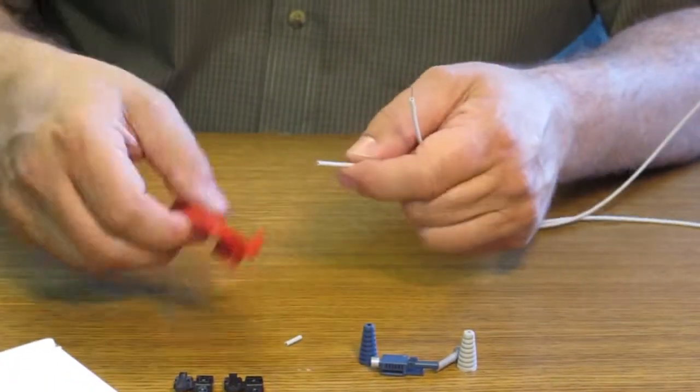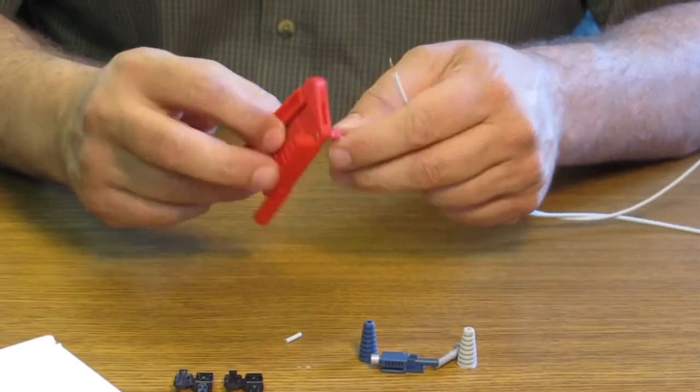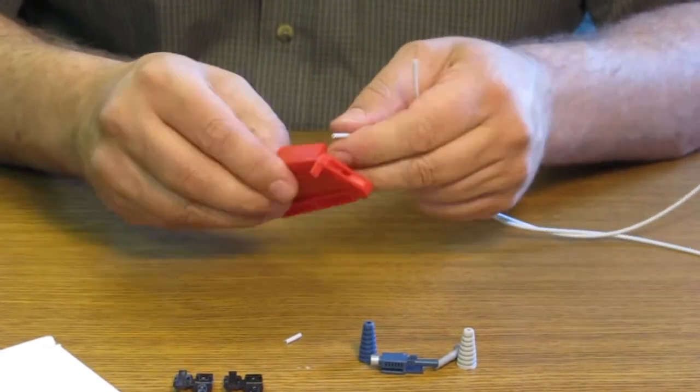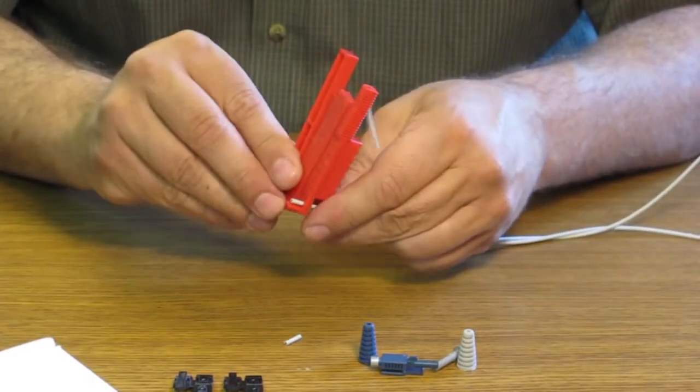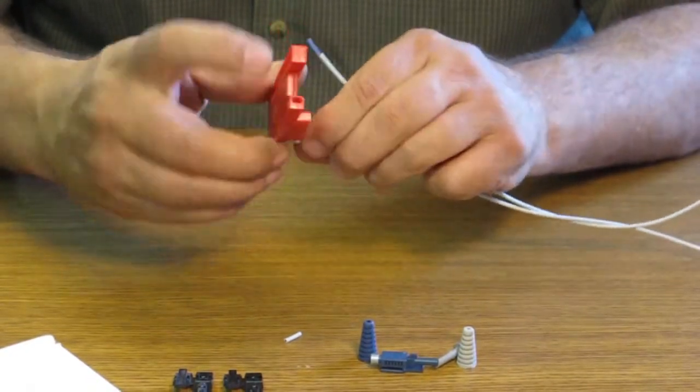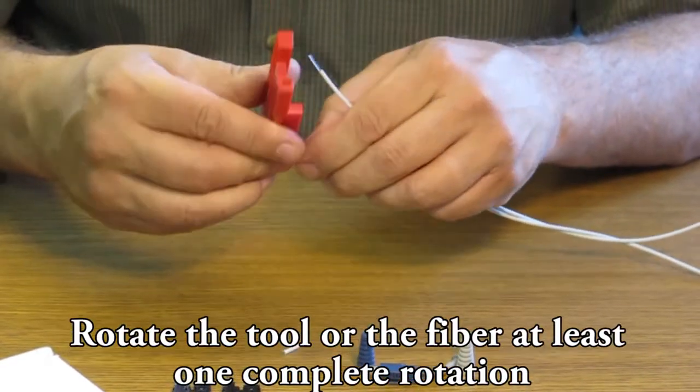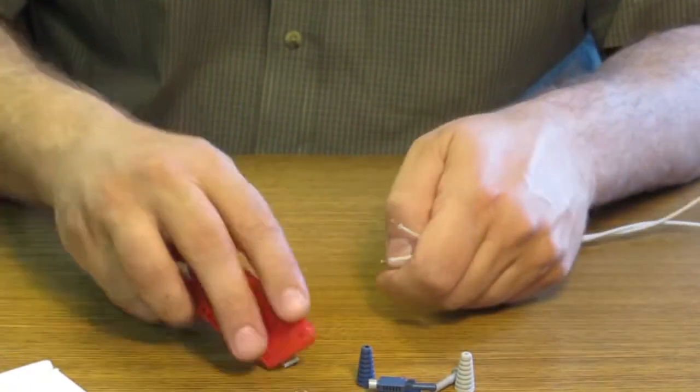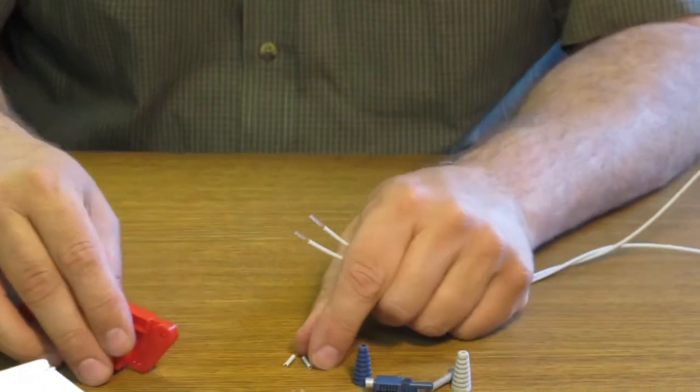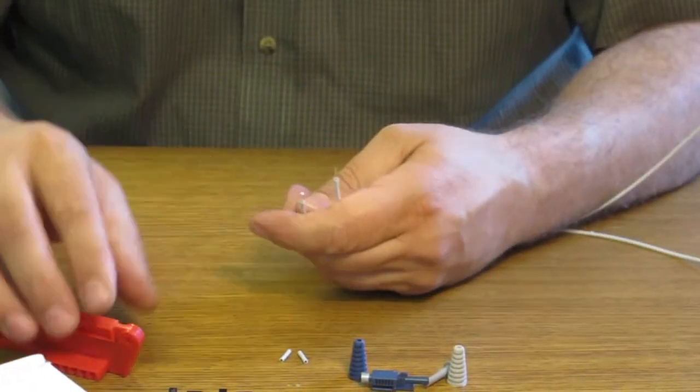You're going to want to do the same thing on the other side. Take it to the length of the tool, rotate the tool or the fiber at least one complete rotation. Pull it and then you've got a stripped jacket. Now the fiber's ready for your connector.